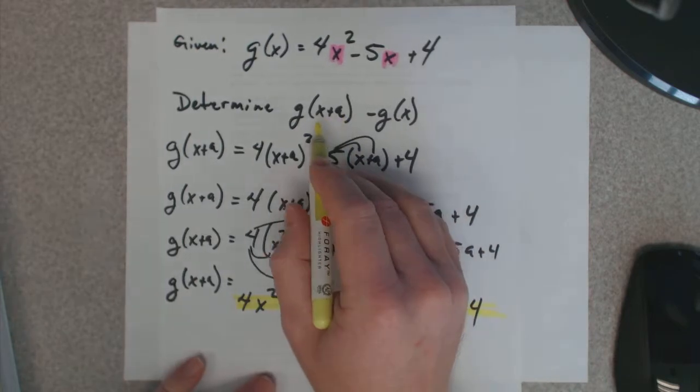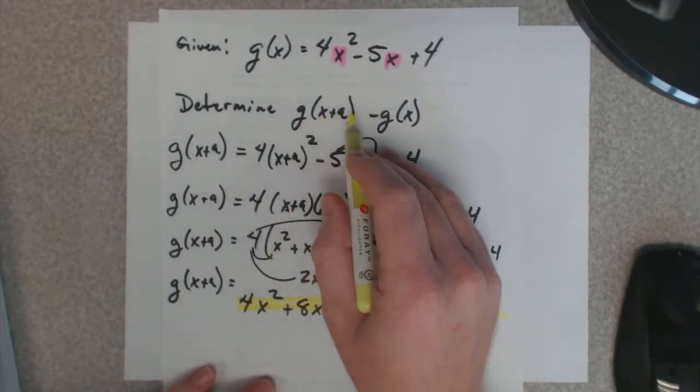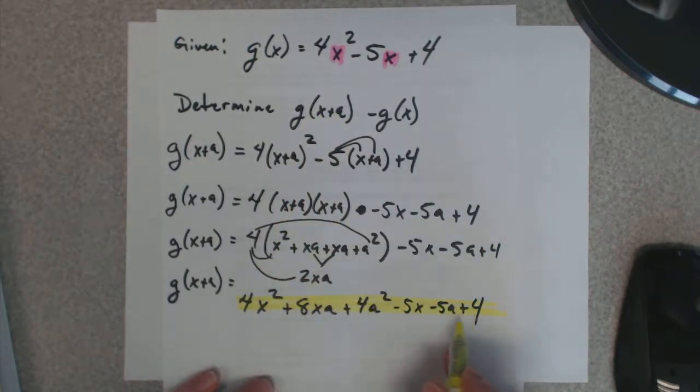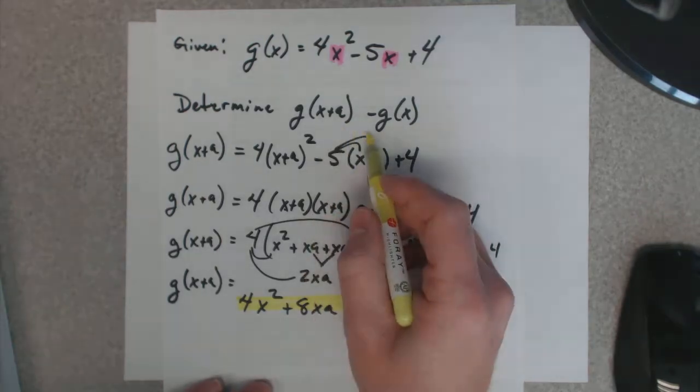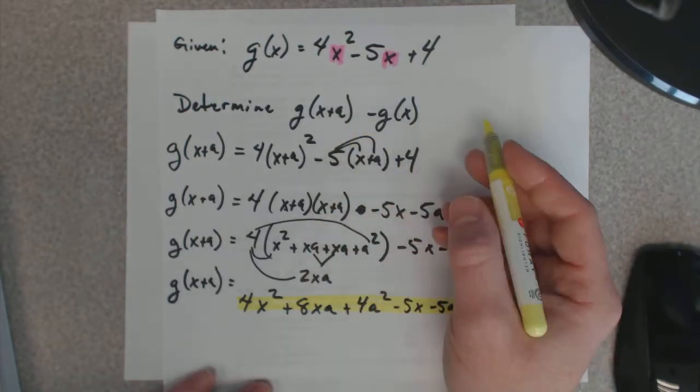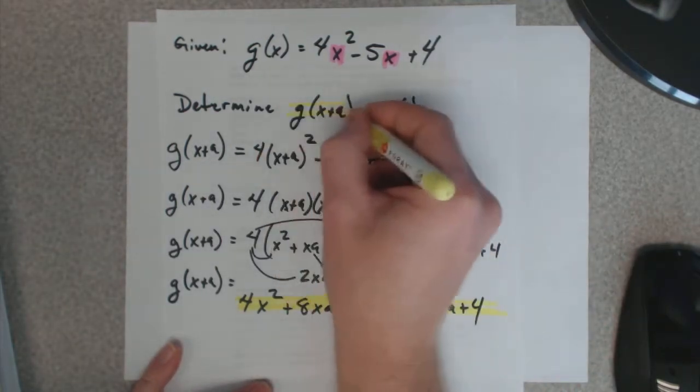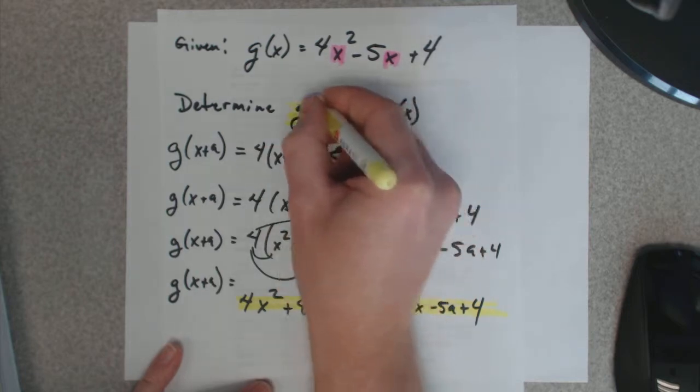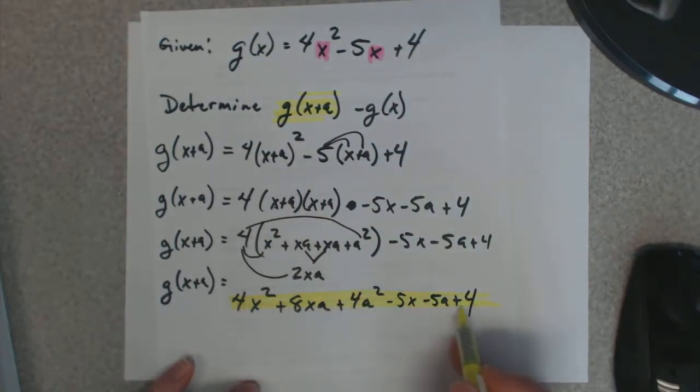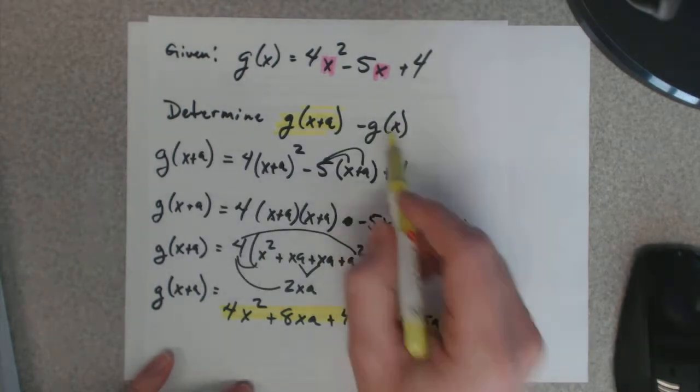Remember the original? I'm supposed to determine g of x plus a, which is this yellow spot, all this yellow right here, minus g of x. So, I'm going to replace this with what it's equal to. It's equal to this right here.